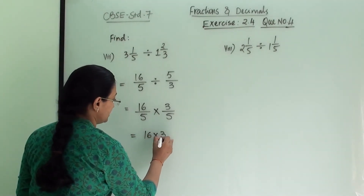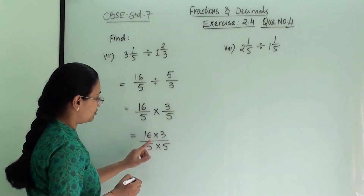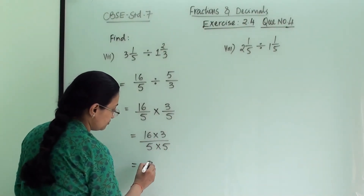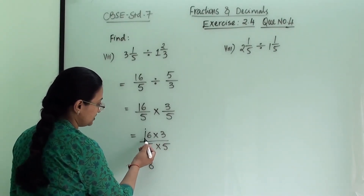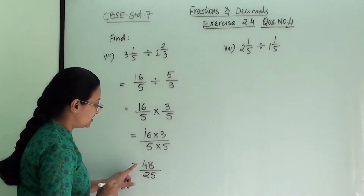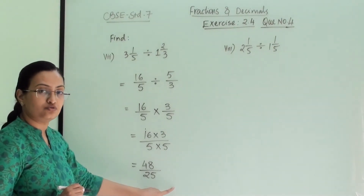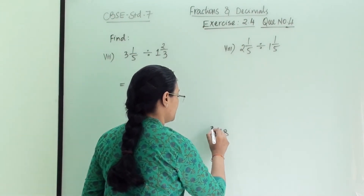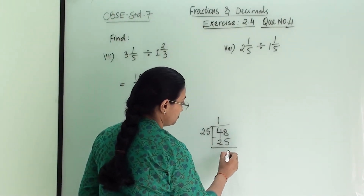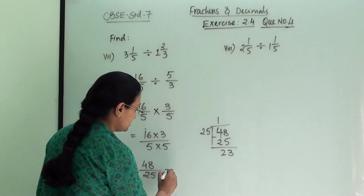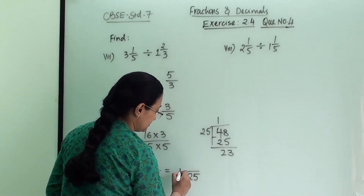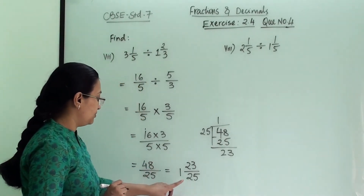So we get 16 into 3 in division with 5 into 5. We check whether we can reduce anything — we cannot. So 16 into 3 is 48 and 5 into 5 is 25, giving us 48 by 25. This is an improper fraction, so we convert it to a mixed fraction. 25 ones are 25; subtracting from 48 gives remainder 23. The answer is 1 and 23 by 25.